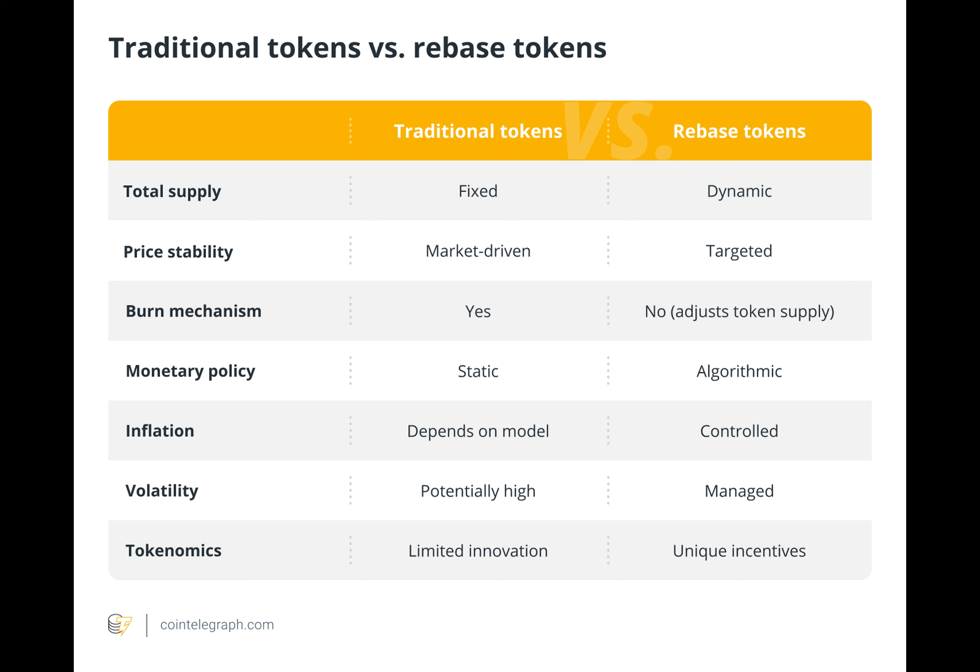Furthermore, rebase tokens frequently function on decentralized networks, encouraging resistance to censorship and removing single points of failure. In addition, the automated nature of the rebase mechanism simplifies the maintenance of price stability by eliminating the need for centralized control and manual intervention.